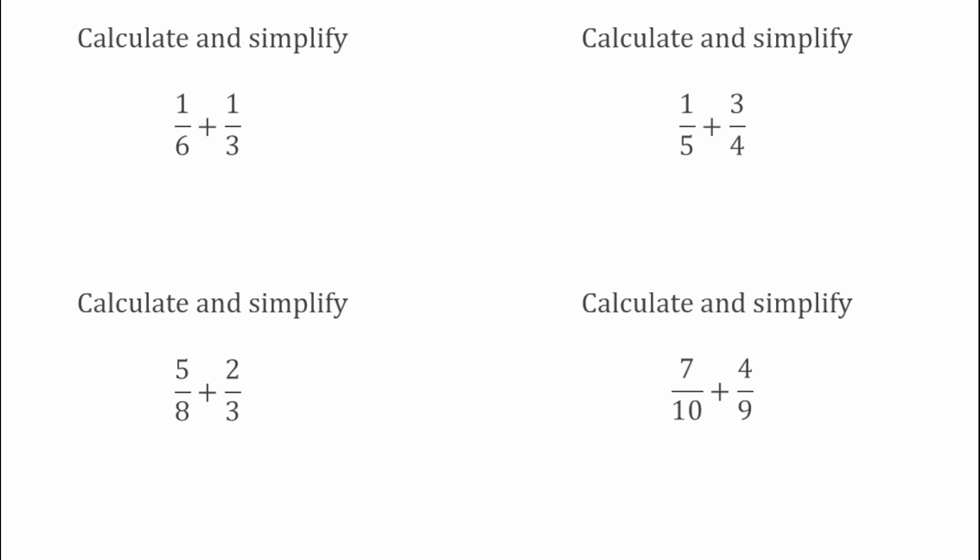For our first question we've got: calculate and simplify 1 over 6 add 1 over 3. Looking at the denominators, we're looking for the lowest common multiple of 6 and 3, which would actually be 6.